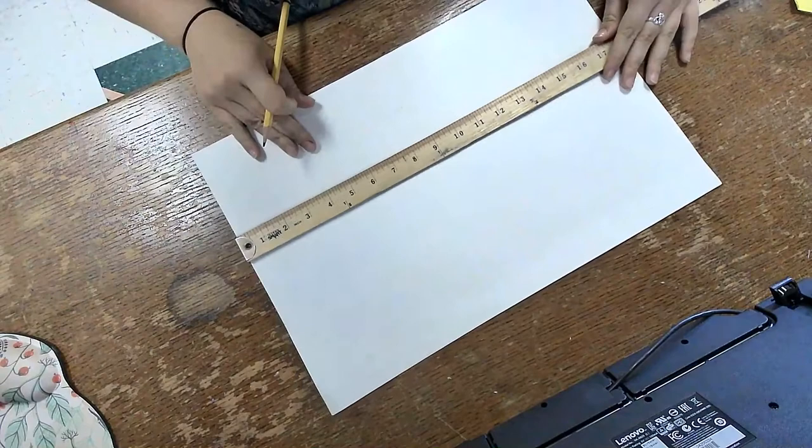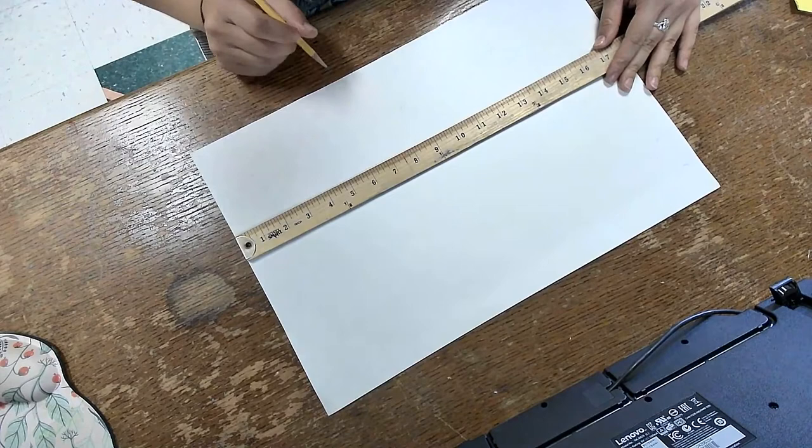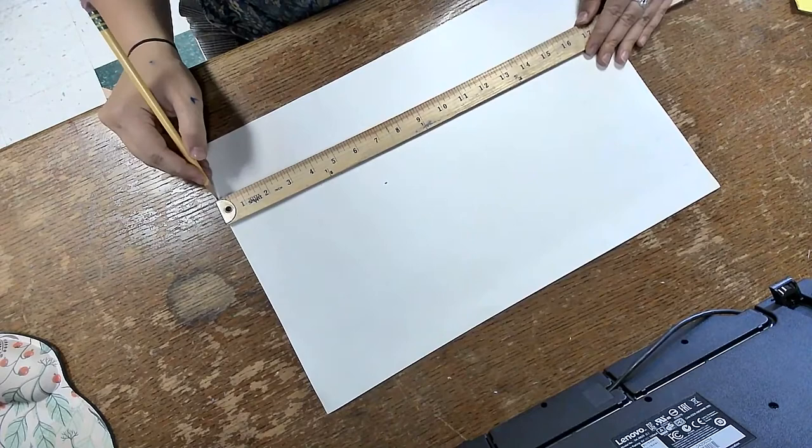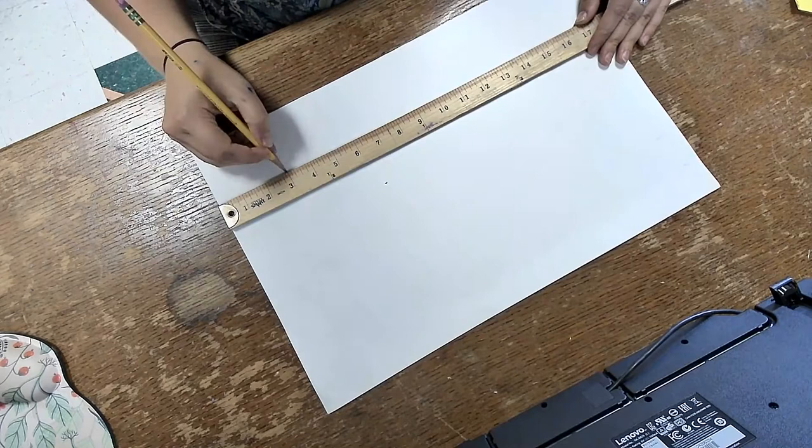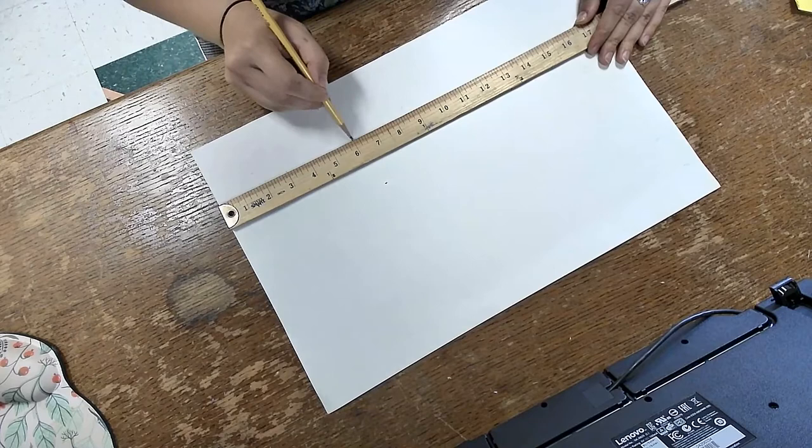Line up your ruler on the edge of your page. Go over to your number three. I like to do two lines so I line it up straight. Go over to your number three, put a little dash very lightly. See how light that is? You can barely see it. Go over to six, three, six, nine, twelve. Count by threes.